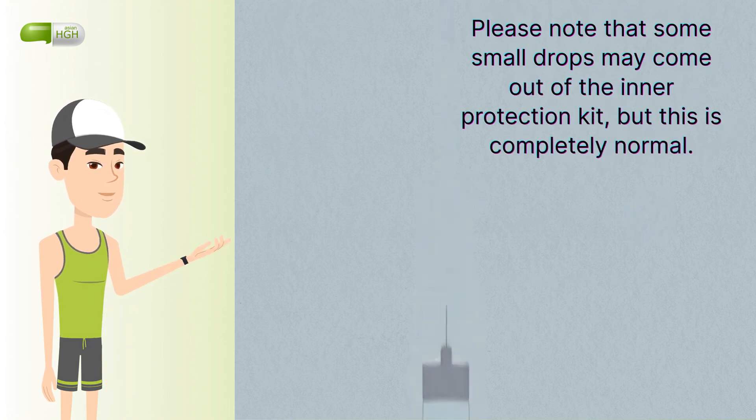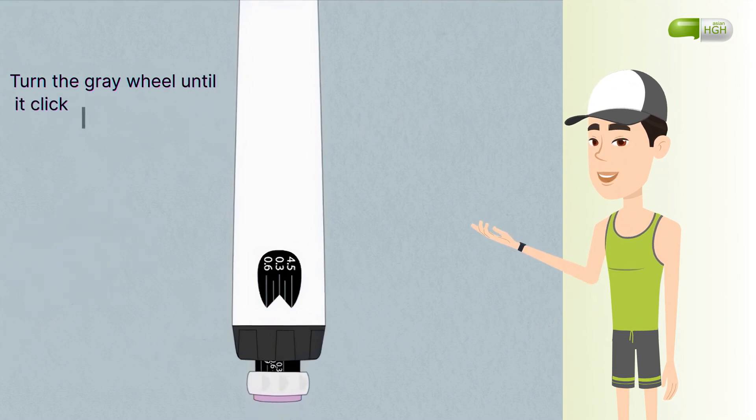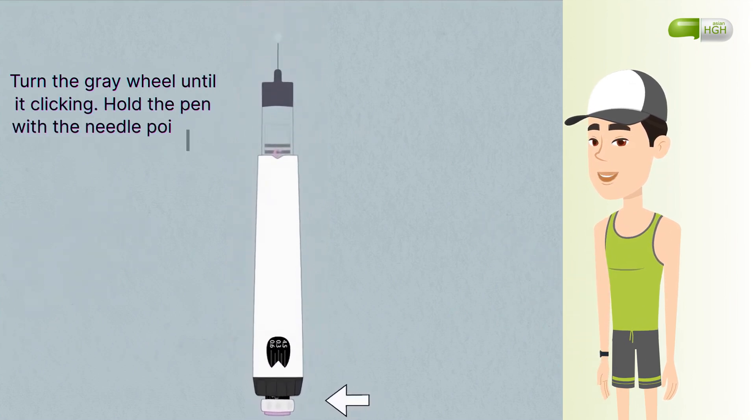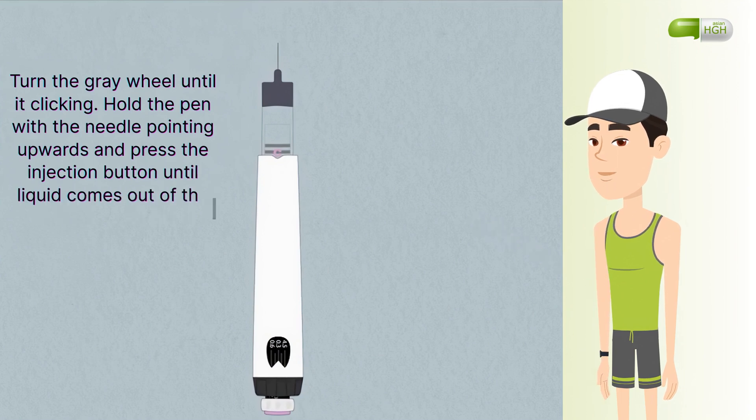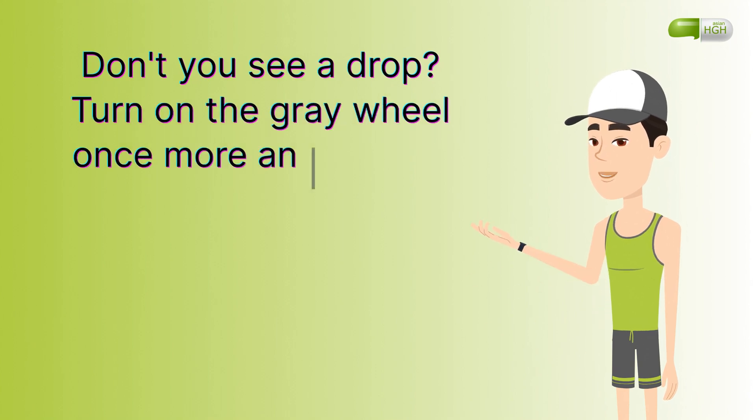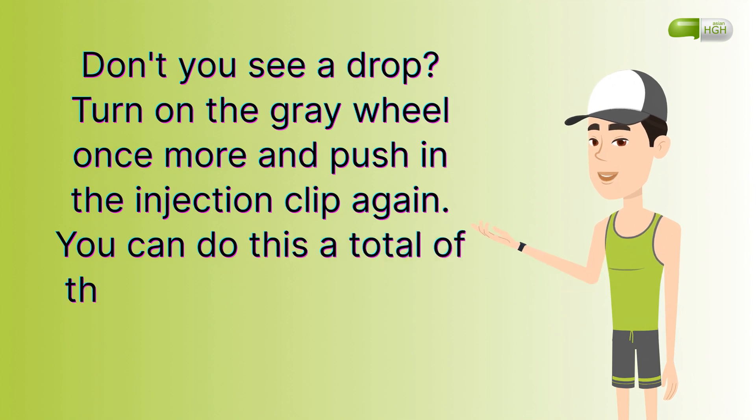Turn the gray wheel until it's clicking. Hold the pen with the needle pointing upwards and press the injection button until liquid comes out of the tip. Don't you see a drop? Turn on the gray wheel once more and push in the injection clip again. You can do this a total of three times. If you don't see a drop, don't use the pen.